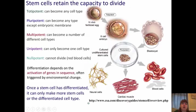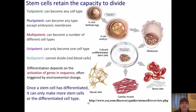The last thing to talk about in this section is stem cells. Stem cells are cells that have retained the capacity to divide. There are several different types. A totipotent cell can become any type of cell — this is a fertilized egg in the womb, the only type of totipotent cell. A pluripotent cell can become any type of cell except for the embryonic membrane. A pluripotent cell will have developed from that totipotent cell — at that point, you've already had separation of the embryonic membrane.